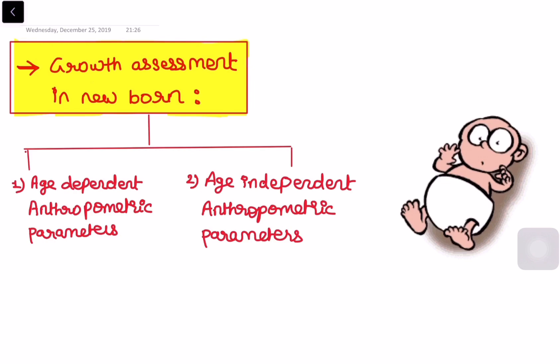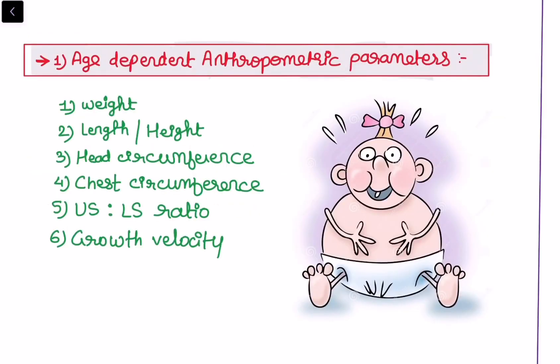We will be discussing age-independent anthropometric parameters in the next lecture. Today, in the age-dependent anthropometric parameters, we will be discussing six topics: first, weight; second, length or height; third, head circumference; fourth, chest circumference; fifth, upper segment to lower segment ratio; and sixth, growth velocity in a newborn.